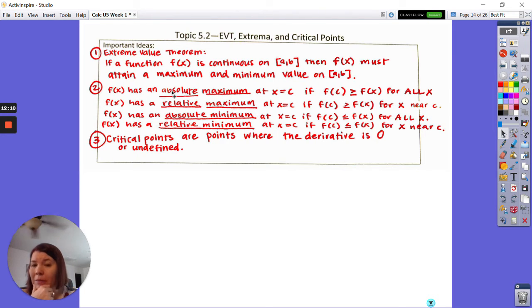There's an absolute max at x equals c if f(c) is greater than or equal to all f(x) for all x. So it's the biggest thing on the function. Has a relative max if it's bigger than everything around it or near c. Has an absolute min if it's the smallest for all x, and a relative min if it's the smallest for everything around it.